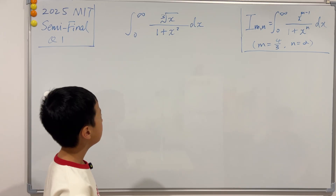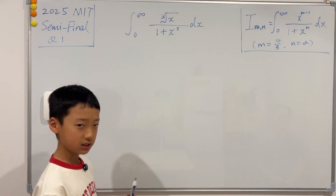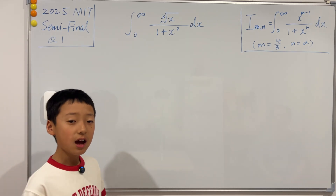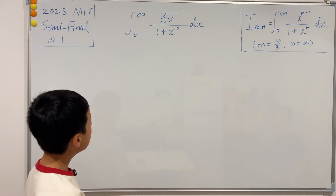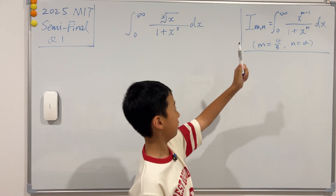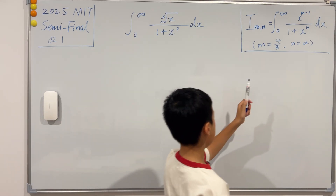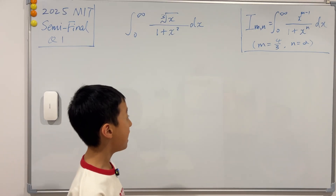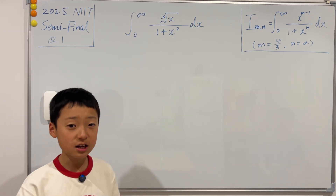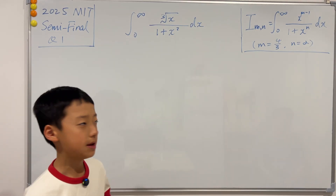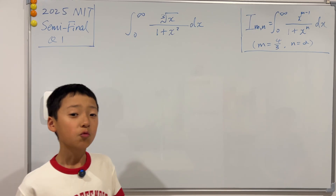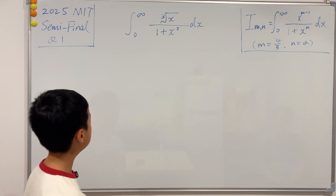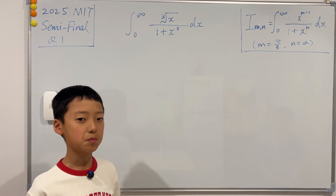This question looks pretty straightforward, but I'm actually going to show you two ways. The first way will only take around 10 seconds to solve — this integral is in the form where m is 4/3 and n is 2, satisfying m > 0 and m < n. I won't go into detail about this method because it involves beta and gamma functions, which are pretty advanced. I may explain this in a future video.